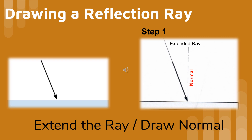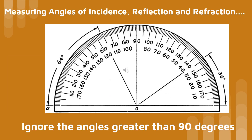After you draw the normal, you need to extend the ray given with your pencil to make it easier to measure the incoming angle. When measuring angles of incidence, reflection, or refraction, ignore the angles on your protractor that are greater than 90 degrees. Also, remember to put the zero-degree line on your protractor on the normal line.